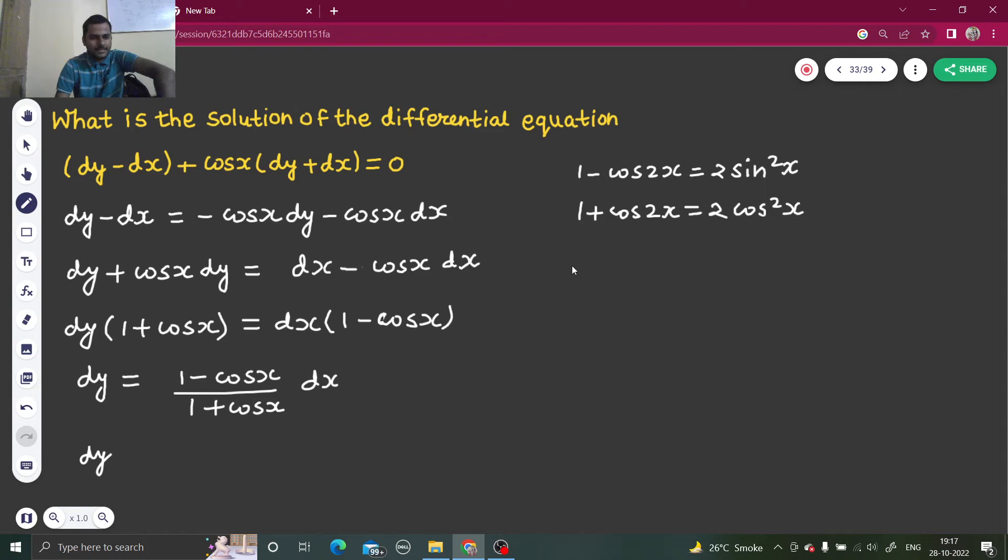So dy is - I can write 1 minus cos x, so the angle becomes half. So when it was cos 2x it became sine x, so when it is cos x it will become 2 sin square x by 2, divided by 2 cos square x by 2. So it will be tan square x by 2.